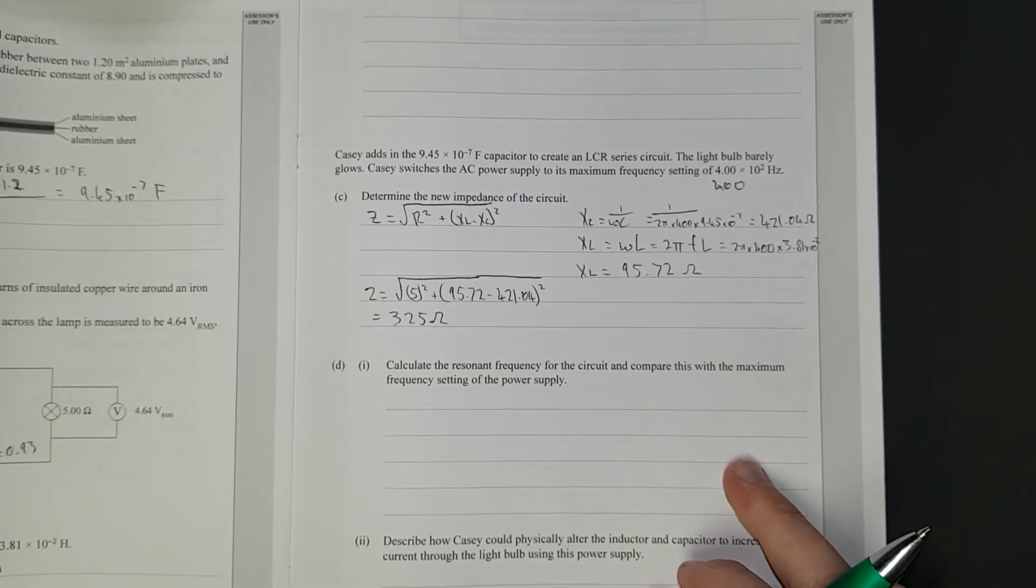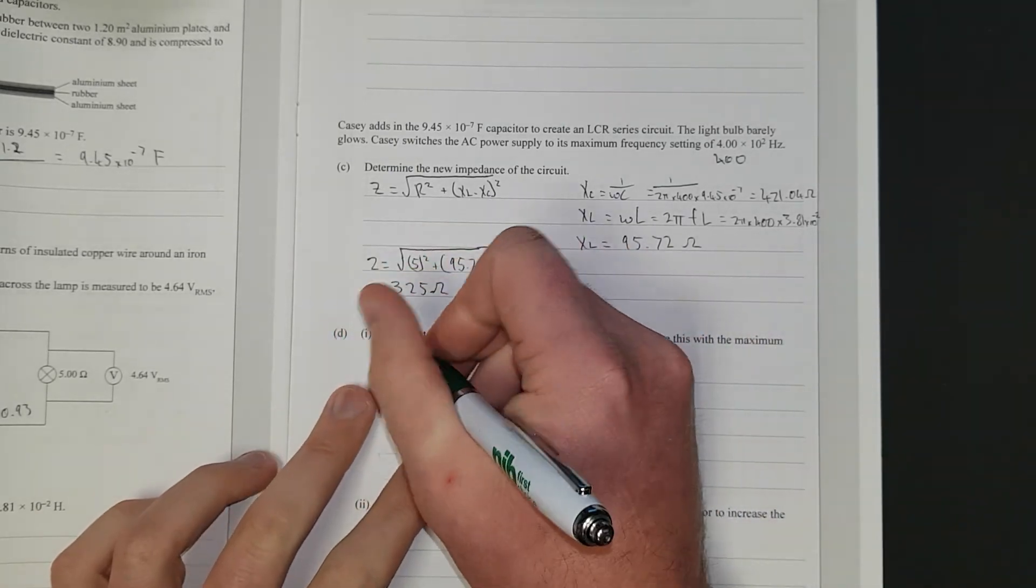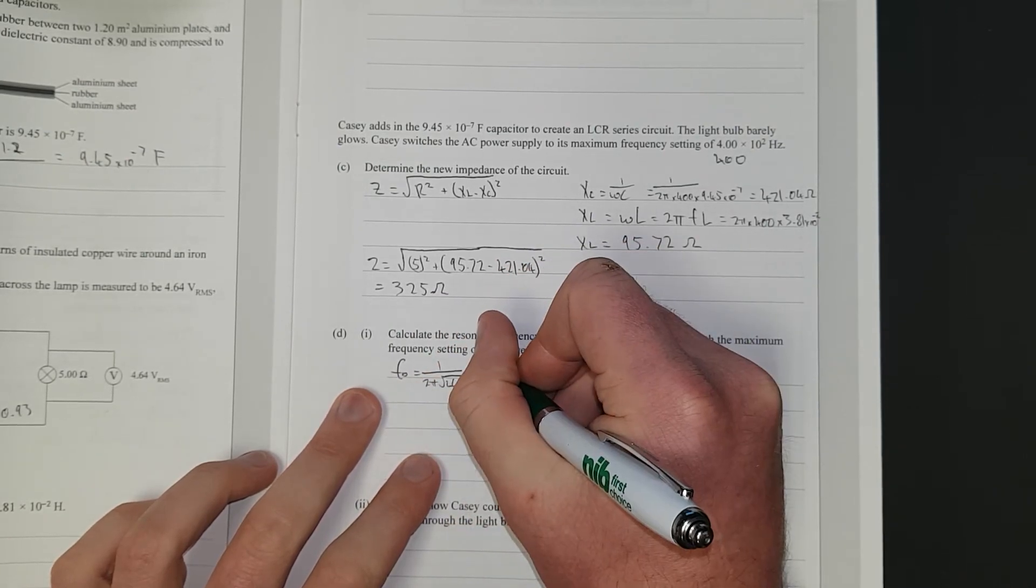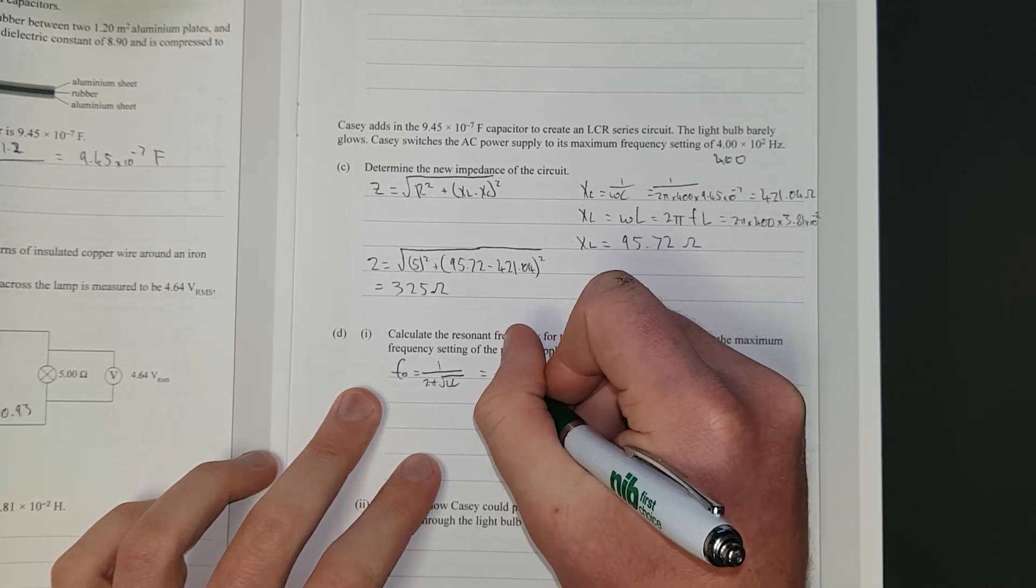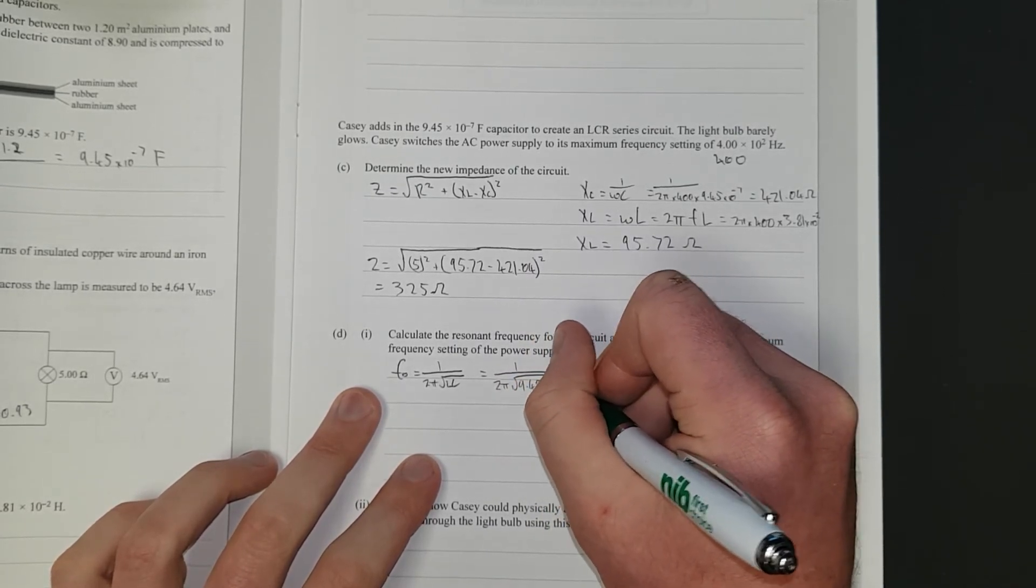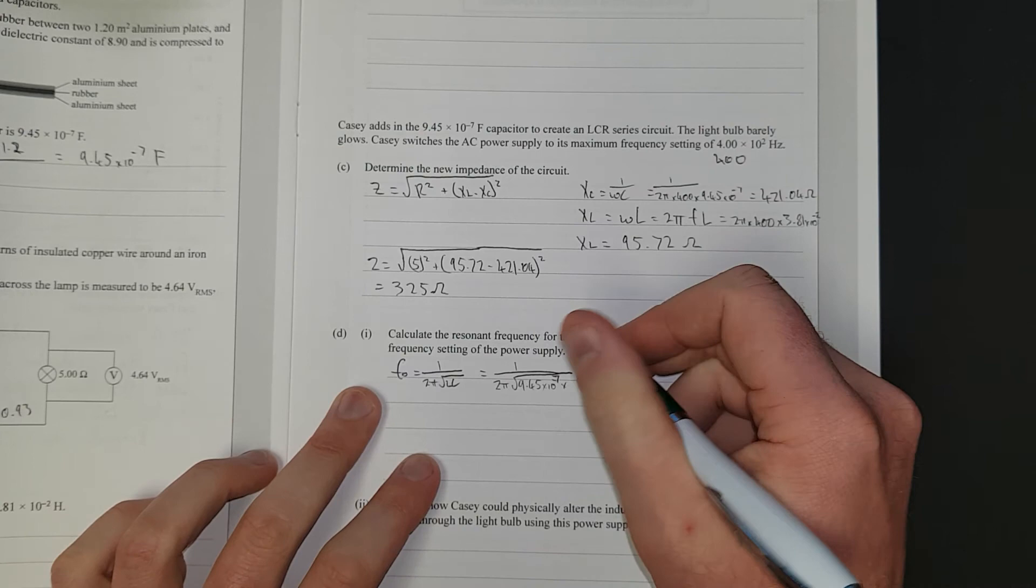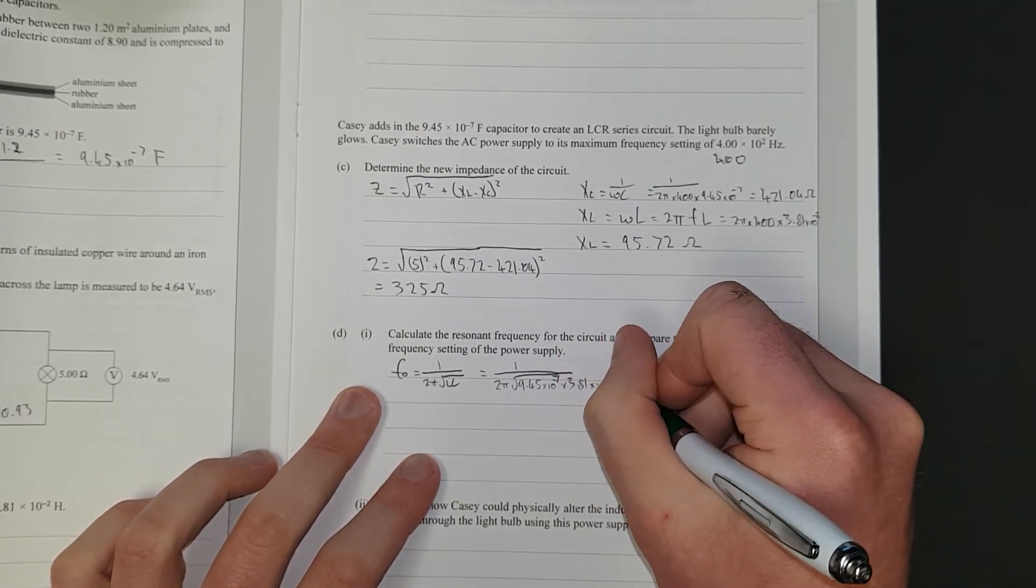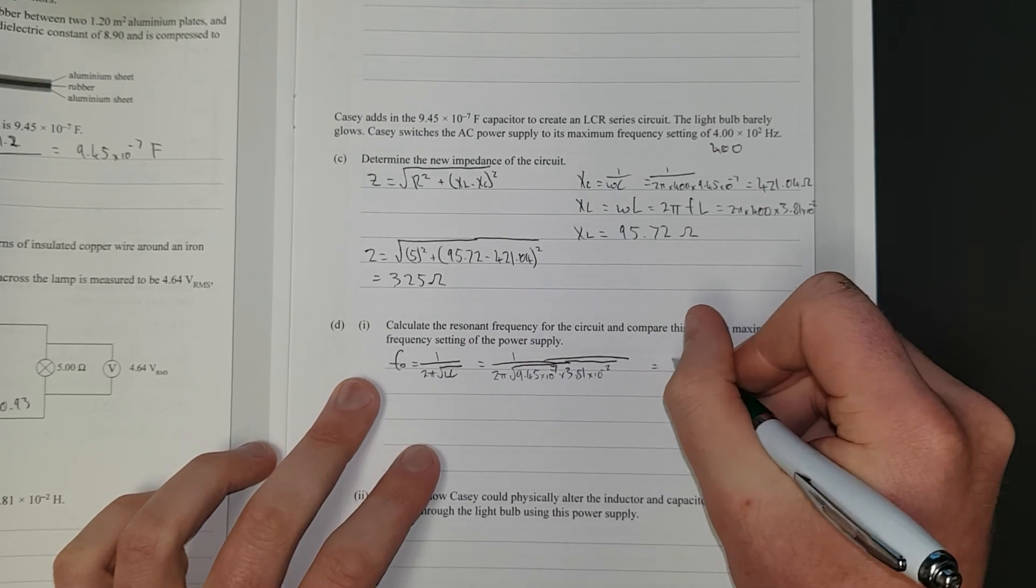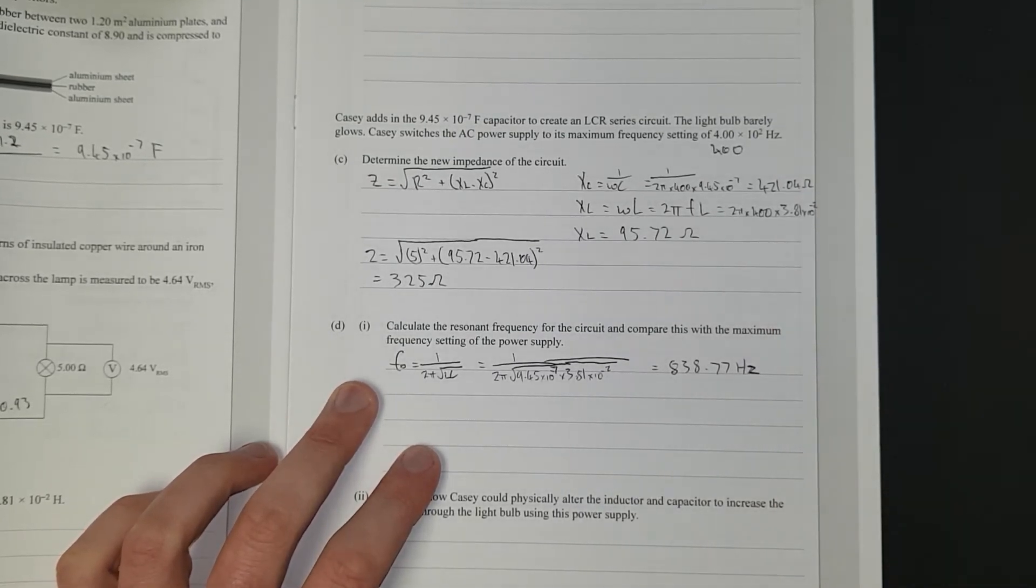Calculate the resonant frequency of the circuit and compare this with the maximum frequency of the power supply. Easy peasy, it's on your formula sheet. f0 is equal to 1 over 2 pi square root LC, which is going to be equal to 1 over 2 pi square root 9.45 times 10 to the negative 7 times 3.81 times 10 to the negative 2. And that is equal to 838.77 hertz. I'm not going to bother rounding. That should be a Z not a 2.